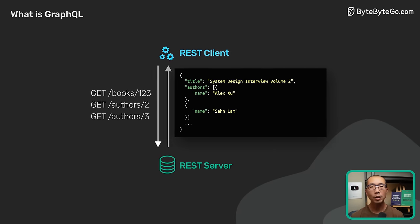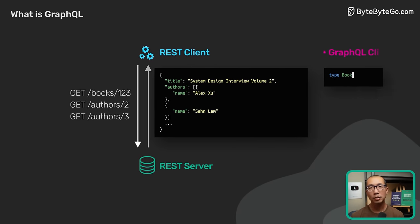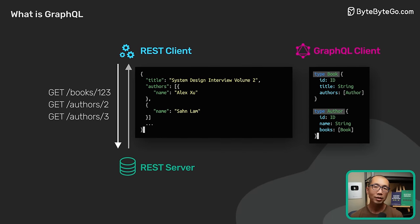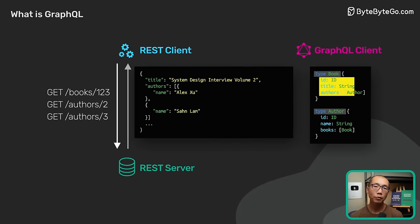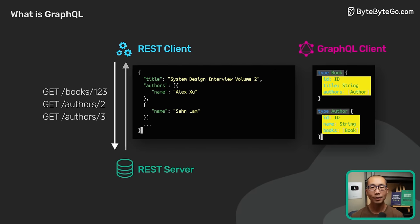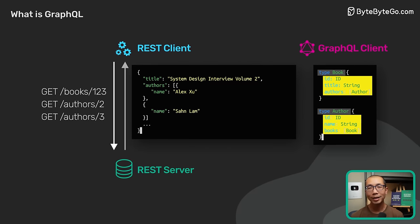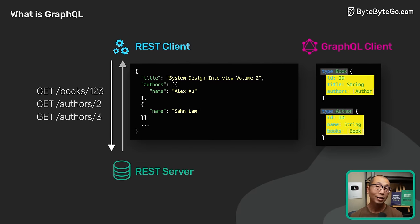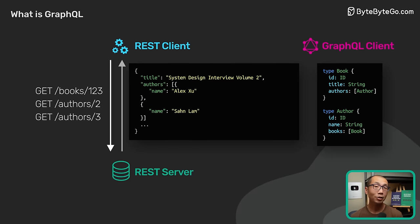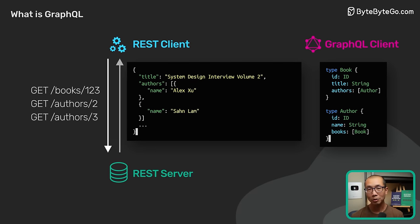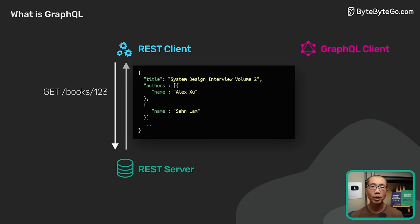With GraphQL, this looks different. We first define the types — in this example, we have the book and author types. These types describe the kinds of data available, but they don't specify how the data is retrieved via GraphQL. To do that, we need to define a query like this.